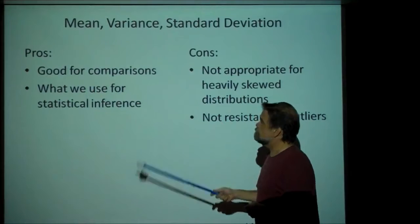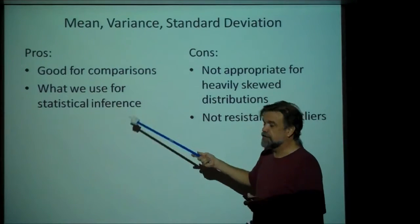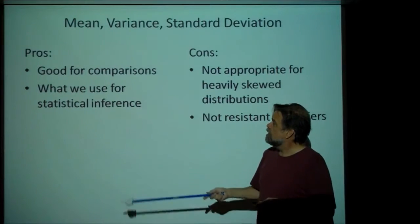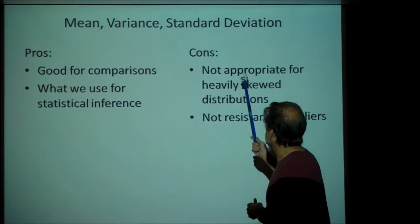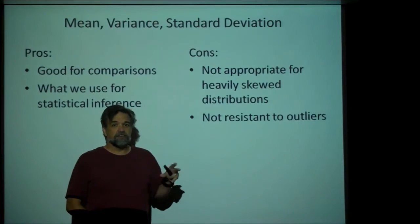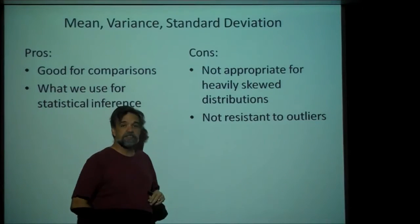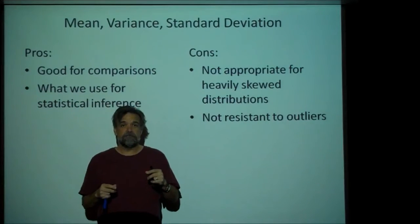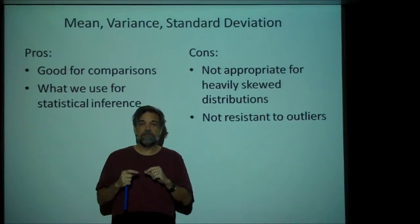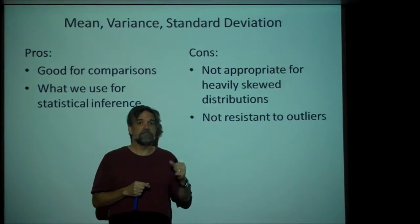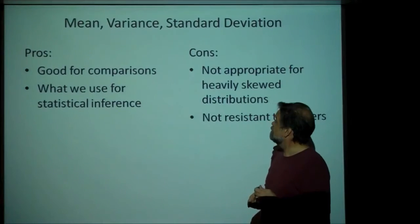So, when should we use the mean, the variance, and the standard deviation? There are some pros and cons. They're good for comparisons, just like the median and IQR are, and they're what we use for statistical inference because the math associated with them is very easy to manipulate. Some cons: the mean and standard deviation are not good measurements to use for heavily skewed distributions — when your distribution is skewed, you should use the median and the IQR. Also, they're not resistant to outliers. If I have an outlier way to the right of the rest of my data and wiggle it around, it doesn't affect the median and IQR at all, but it does affect the mean, variance, and standard deviation. That's it for this video — thanks for watching.